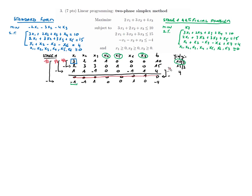After performing the row operation, we obtain the updated tableau. The last row now shows the reduced cost coefficients r, and we can see two negative values, so we have not yet reached the optimum. Since two r-coefficients equal minus 1, we select the leftmost variable, x1, to enter the base.